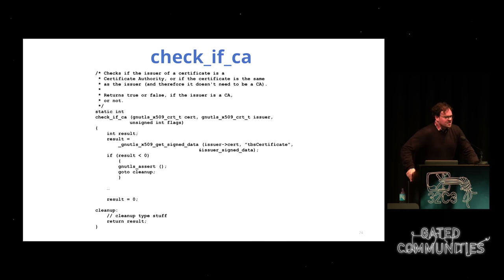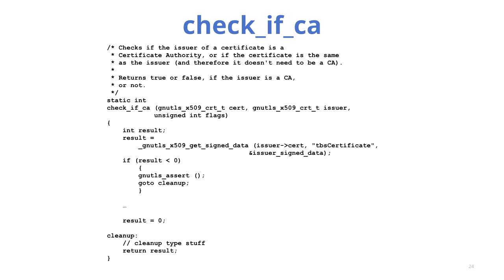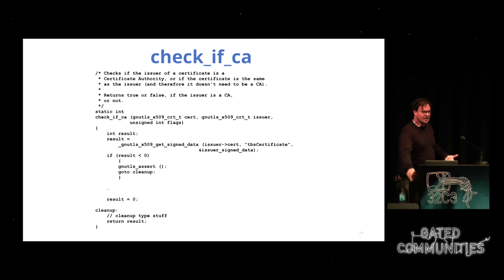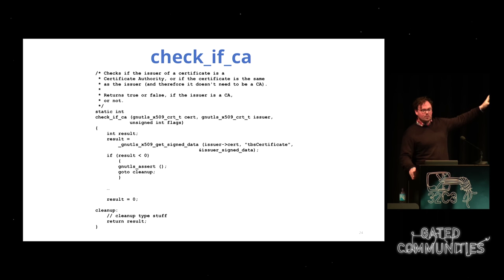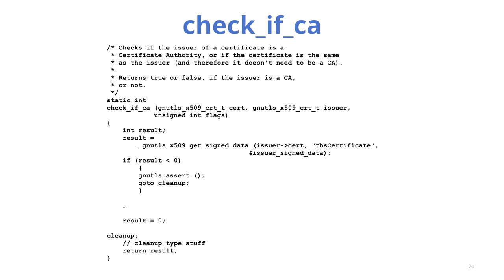This is code in a library called GnuTLS. What it's really doing is supposed to check if this is a CA. It turns out, if you remember your C correctly, anything other than a zero return value is true and zero is false. What happens here is if the 'get signed data' call fails, you return result — which is going to be a negative number, and therefore it's going to say yes, this is a CA. So this bug really says: if you give it an invalid issuer, this is completely good as a CA. This code was introduced in 2005 and discovered as a bug in 2014 — nine years.